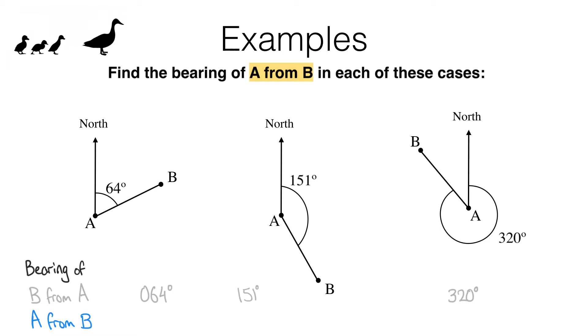That means we need to imagine starting at B. So let's imagine we're at B and facing north. Now, what clockwise angle do we need to turn so we end up facing A? Well, that is this angle here. How can we work out the size of this angle?